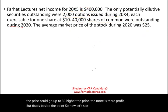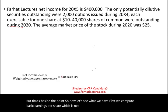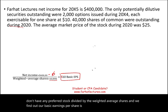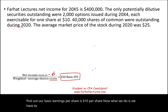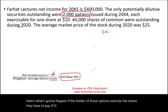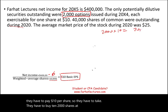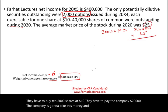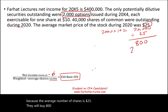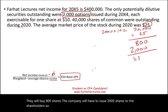First, we compute basic earnings per share: net income of $400,000 minus preferred dividends of zero, divided by the weighted average shares of 40,000, giving us basic EPS of $10 per share. Now we apply the treasury method. If the holders exercise their 2,000 options, they pay $10 per share, so the company receives $20,000. The company then takes that $20,000 and buys shares at the average market price of $25, purchasing 800 shares.